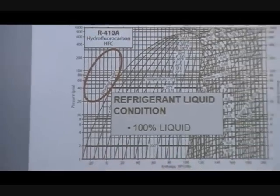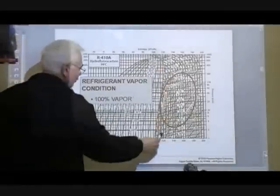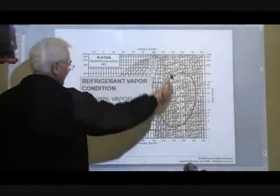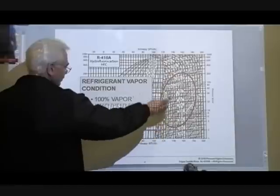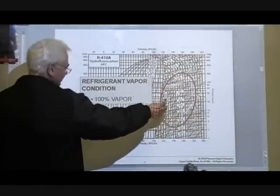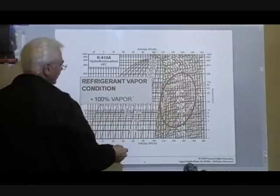The other slide talks about 100 percent vapor, which occurs in your evaporator. What's happening in the evaporator is over here on this side of the chart. These percent lines represent percent vapor. The pressure-enthalpy diagram is a graphical representation of what's happening inside that vapor compression refrigeration system.